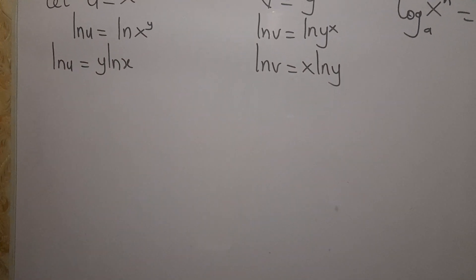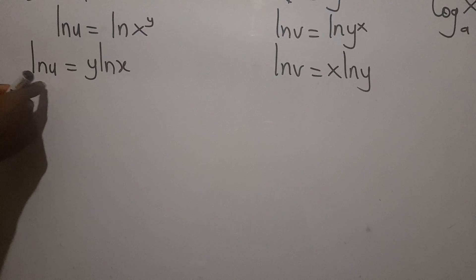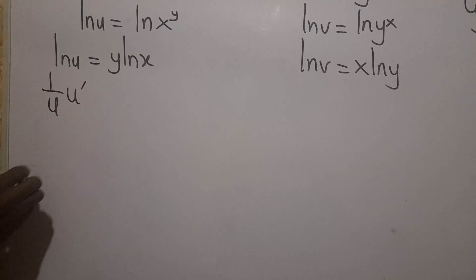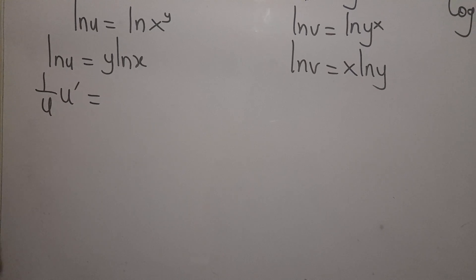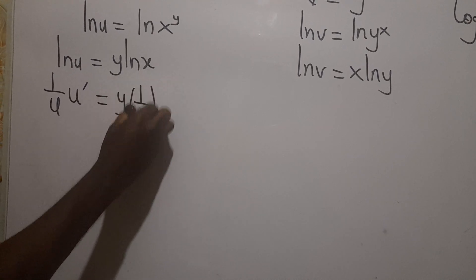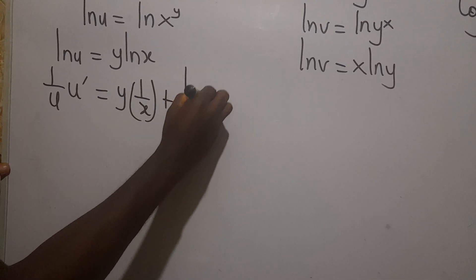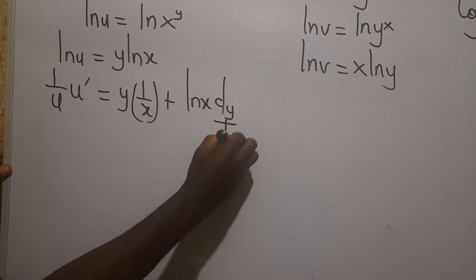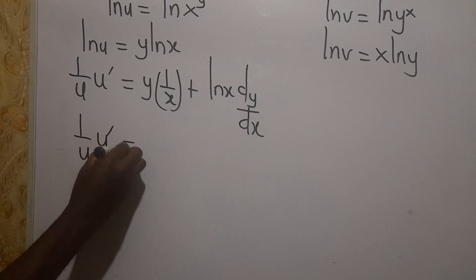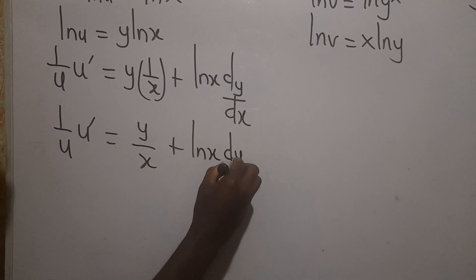Now we differentiate where x is the independent variable and u and y are dependent. Using implicit differentiation, the differential of ln u gives 1 over u times u prime. On the right side, I'll apply the product rule: keeping y and differentiating ln x gives y times 1 over x, then plus keeping ln x and differentiating y gives ln x times dy/dx. So 1 over u times u prime equals y over x plus ln x times dy/dx.